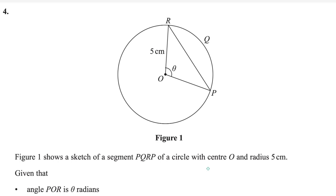Welcome back to Mamba's Channel MathPub. Let us start question number 4 from Pearson and Excel A-level exam for Pure Math 4. This exam is taken in the May-June session, year 2024. The paper reference code is WMA14/01.